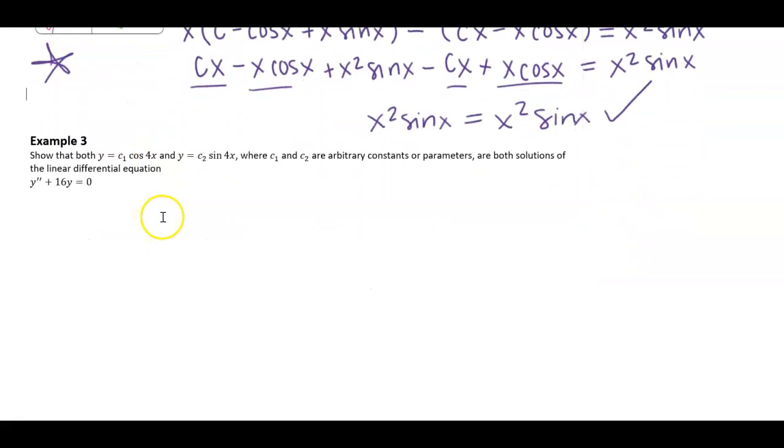Let's look at one more example and show that both of these are solutions to this linear differential equation. Notice here I need a second derivative. So let's maybe call this y1. So y1 prime would be negative 4c1 sine of 4x and y1 double prime would then be negative 16c1 cosine of 4x.